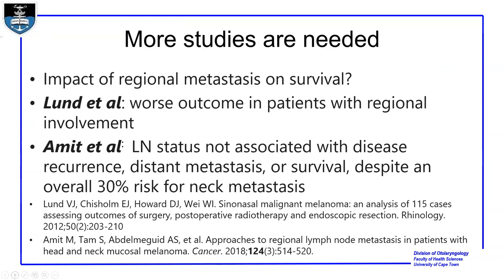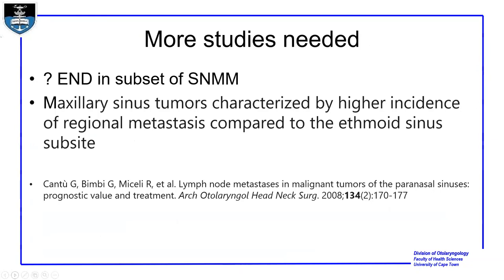More studies are needed regarding neck management. What is the impact of regional metastasis on survival? Lund et al. found a worse outcome in patients with regional involvement. Amit et al. found that lymph node status was not associated with disease recurrence, distant metastasis, or survival, despite an overall 30% risk for neck metastasis — published in the Cancer Journal in 2018. So the question remains: are there patients with sinonasal mucosal melanoma, particularly those with maxillary sinus tumors, which have a higher incidence of regional metastasis, who could benefit from elective neck dissection?